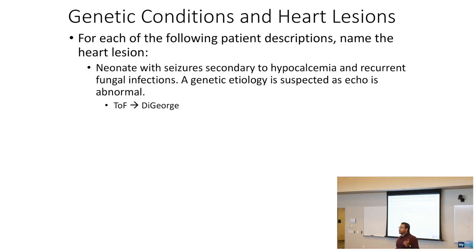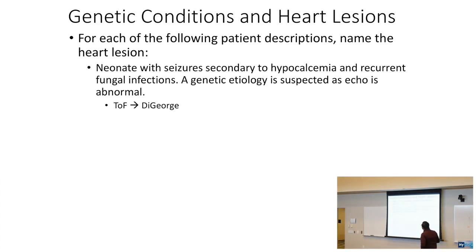DiGeorge syndrome is going to present with hypocalcemia because of failing parathyroid glands. So in DiGeorge syndrome, what's going to be the heart lesion? Tetralogy of Fallot.